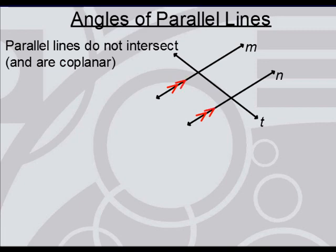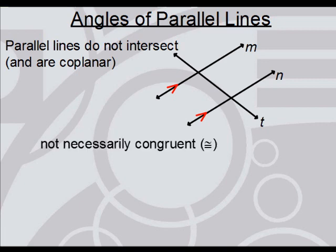You might even see two arrows instead of one. In either case, if they have the same number of arrows, they are parallel to one another. I want to underscore that parallel does not necessarily mean congruent.